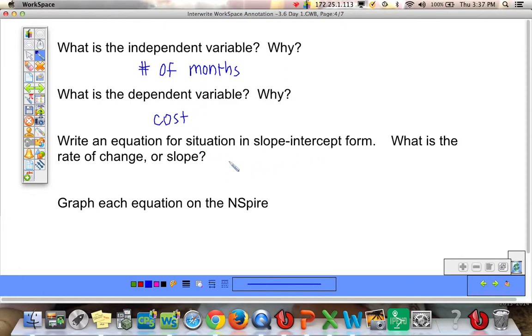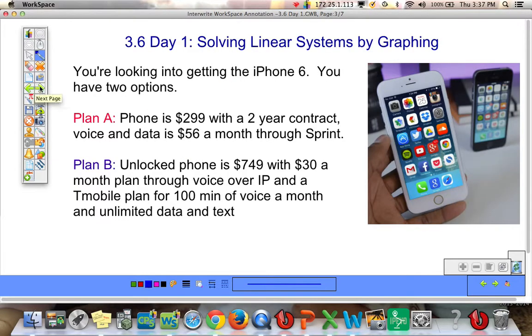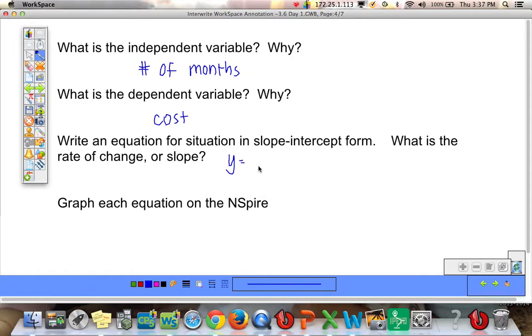All right, so we're going to start with the first equation. The starting value, $299, and it's $56 a month. So we have our starting value, $299, plus $56 per month, and x is the number of months.